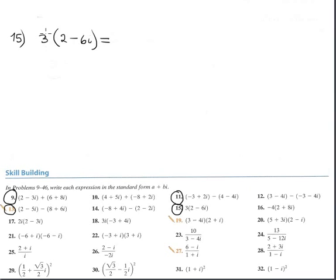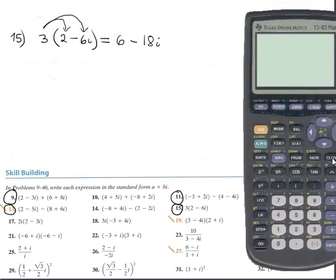Now multiplication. In this case, multiplication of a real number times a complex number — just apply the distributive property. You multiply 3 times this and 3 times that. This gives 6 minus 18i. We verify with the calculator: enter 3 times parenthesis (2 minus 6i), press enter. It is 6 minus 18i. Perfect.